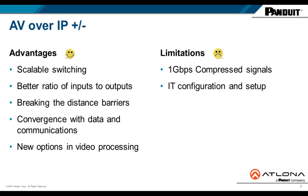Limitations of AV over IP: One-gigabit compressed signals — the heavy HDMI signal must be reduced to fit into a standard 1-gig network, which could cause some signal loss, though improved video processing makes this less of a concern. Also, IT configuration and setup — you need to consider how your switch is configured, whether you need separate VLANs, and how to route network traffic appropriately. This is a new consideration that AV over IP brings to the market.